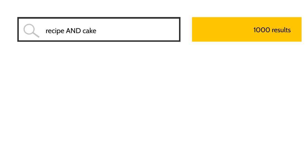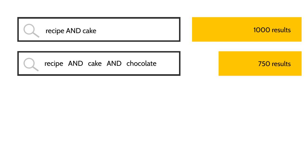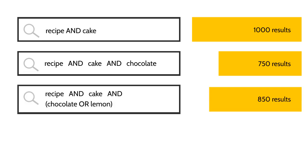Pat searches for the keywords cake and recipe. When Pat adds the keyword chocolate with the Boolean operator AND, he adds another condition: the cake recipe must be chocolate. AND decreases the number of results. When Pat uses the Boolean operator OR, he provides a keyword option — the cake recipe can be chocolate or lemon. OR increases the number of results.